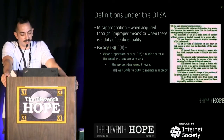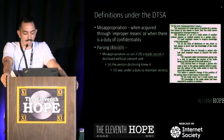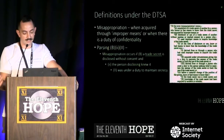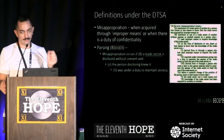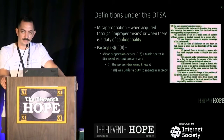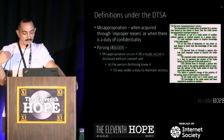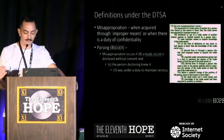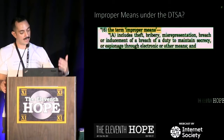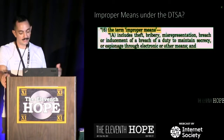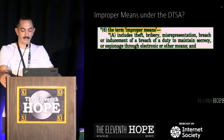Under the DTSA, misappropriation of a trade secret is essentially defined as being done by improper means, or when there is a duty of confidentiality. Misappropriation can occur if a trade secret is disclosed without the consent of the party to whom it belongs, and the person disclosing it knew it was protected and was under a duty to maintain secrecy. Improper means is defined as theft, bribery, misrepresentation, breach, inducement of a duty to maintain secrecy, or espionage through electronic or other means.